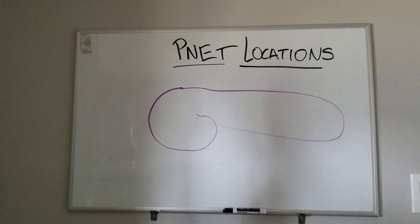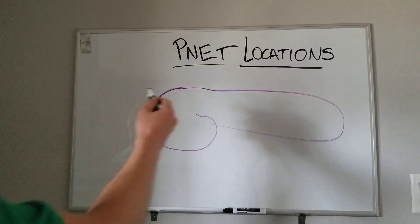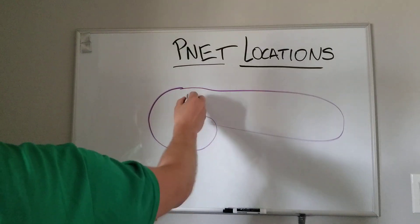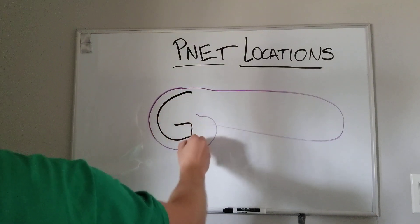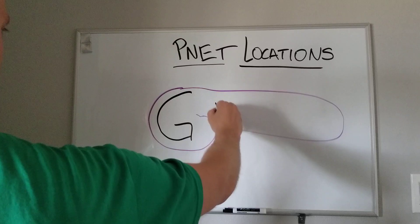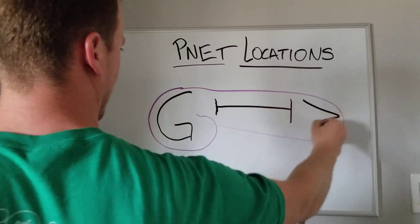The way to remember this is you just draw out this picture. This already looks like a G. It's already lending itself to that. And then here you have a long body, the ends, and the tail.